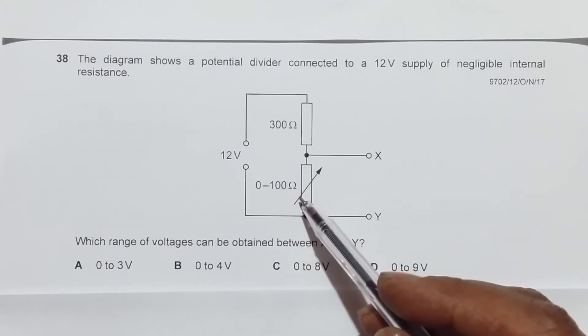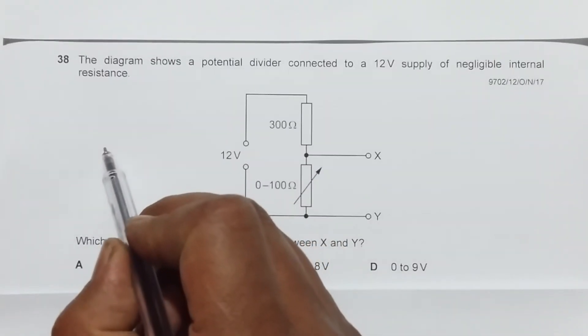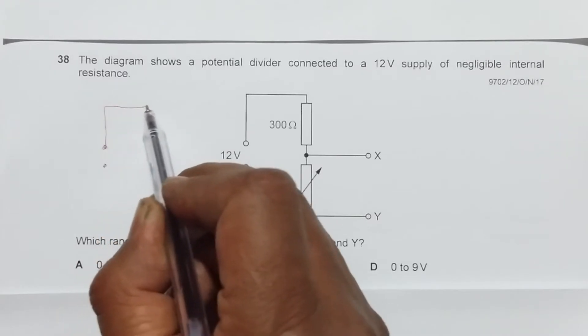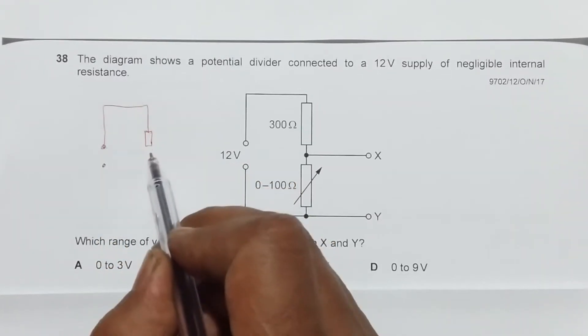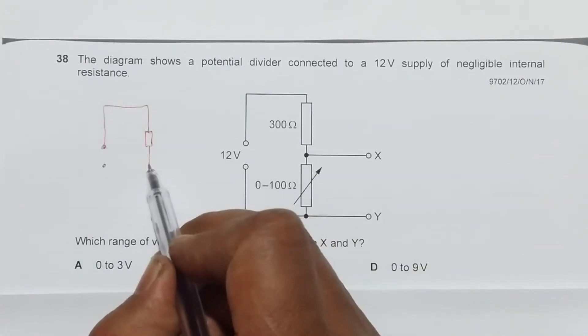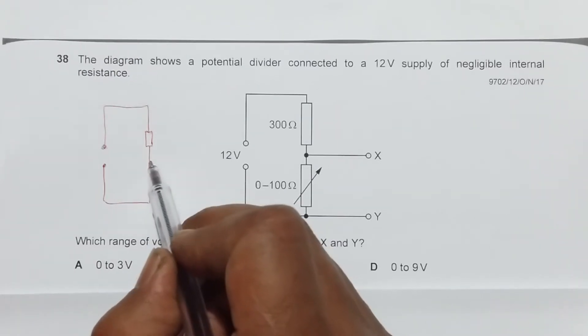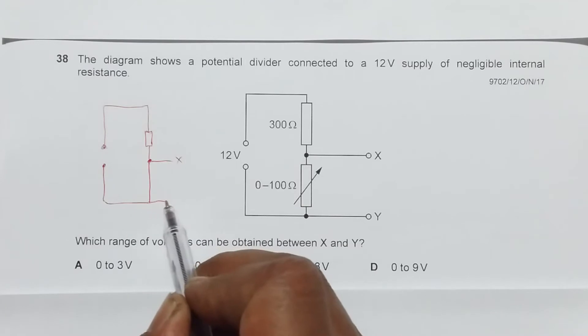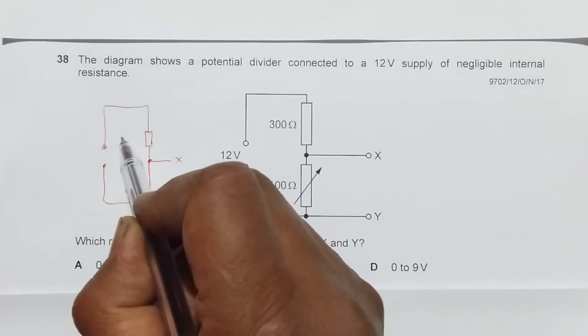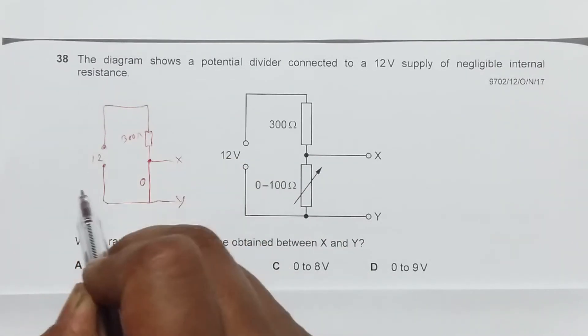When it has a value of zero, the whole circuit will appear like this. The supply goes like this, this is the fixed resistor of 300 ohm, and here since it is zero ohm it will be simply a wire connection. Here we have the X terminal and here we have the Y terminal. This is zero ohm and this is 300 ohm and this is 12 volts.